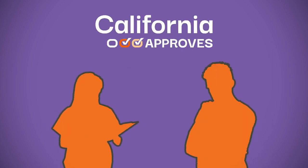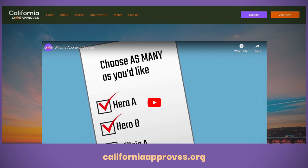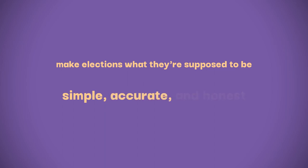California Approves is now raising funds to collect the hundreds of thousands of signatures necessary. At CaliforniaApproves.org, you can make a donation, volunteer, or buy merchandise to support the effort. Every little bit helps. And together, we can make elections what they're supposed to be. Simple, accurate, and honest.